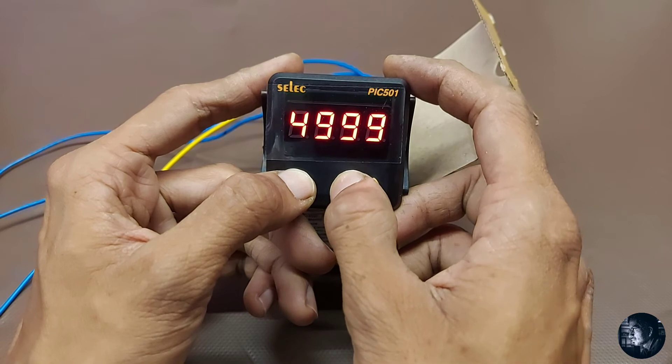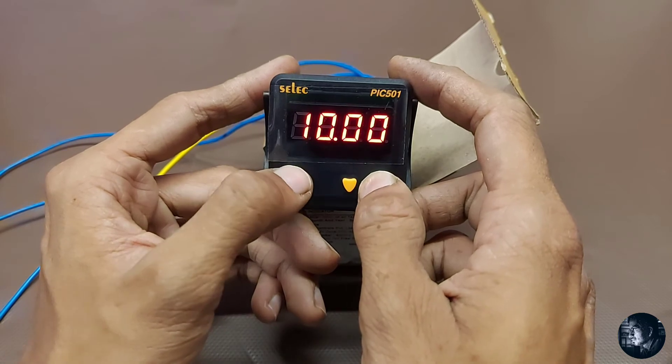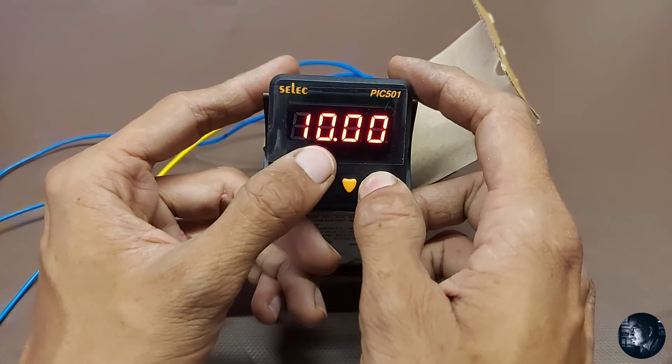We press and hold the select button, then change the value. We will set it to 1500 as it represents the motor RPM. isch is the input high voltage, 10V.